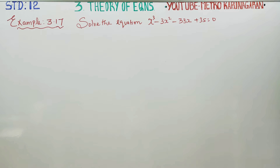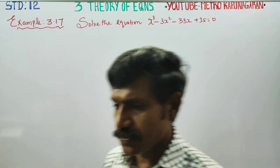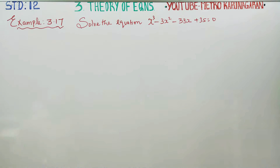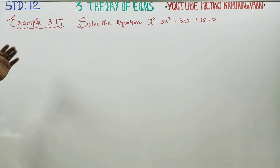Dear Toll Standard students, in theory of equations, you have to solve the equation x³ - 3x² - 33x + 35, as in example 3.17.